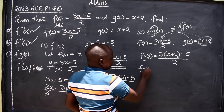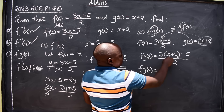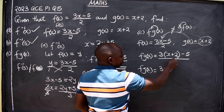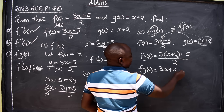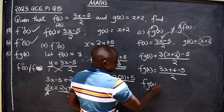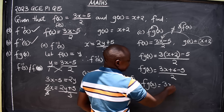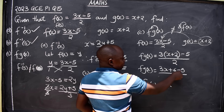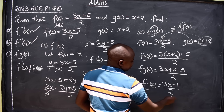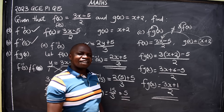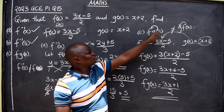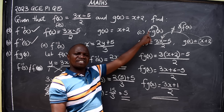Now we simplify: f(g(x)) = (3×x + 3×2 - 5)/2 = (3x + 6 - 5)/2 = (3x + 1)/2. Always remember that for composite functions, the second function should go into the first function.